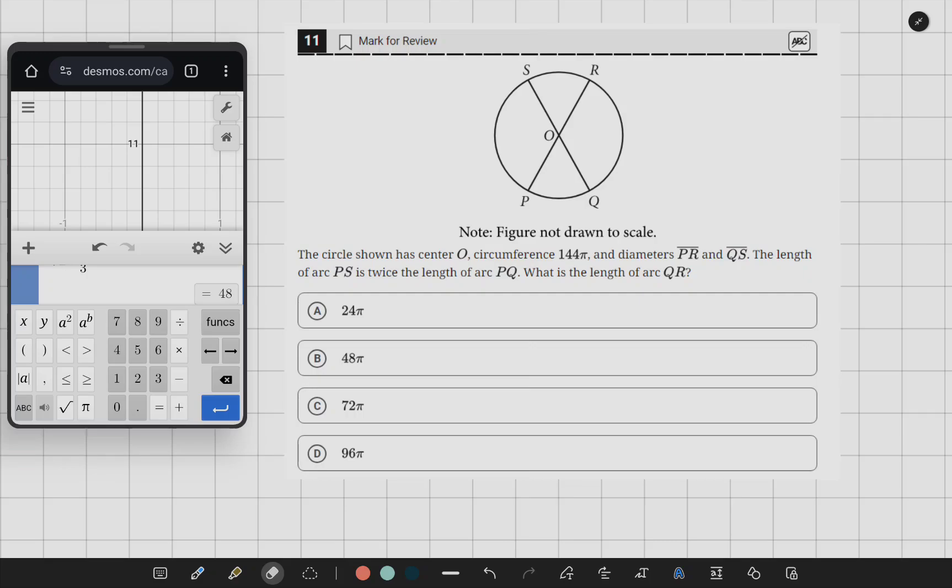In these questions, we see that there is a center at O and a circumference of 144π. We can use that with the formula 2πr to figure out the radius.